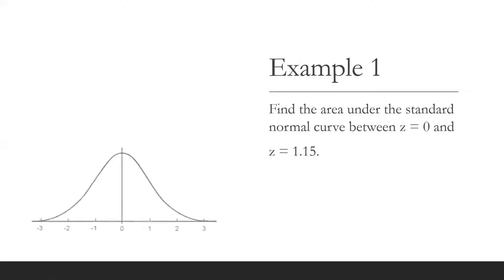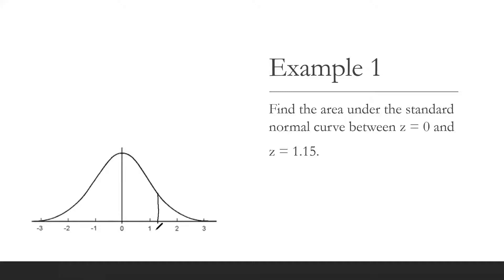The first thing that we need to do is to draw the normal curve and then locate z equals 1.15 and z equals 0 on it. 1.15 is between 1 and 2, so suppose this is where z equals 1.15 is located. Let's label this as 1.15. We are asked to find the area from 0 to 1.15.